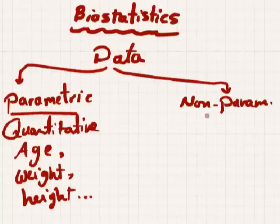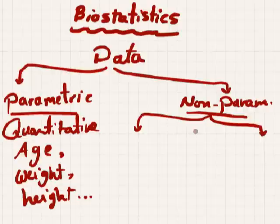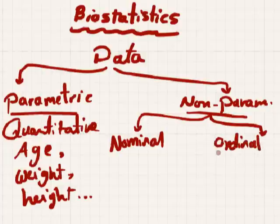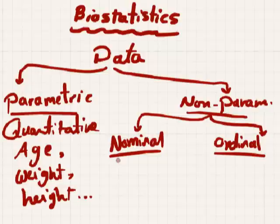Non-parametric data comes in two types: nominal data or ordinal data. Nominal data is defined by name categories. For example, when I say 'What's your gender?' you say 'I'm a female' or 'I'm a male' and so on. So gender is nominal data.